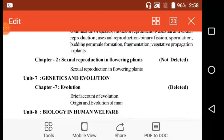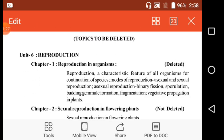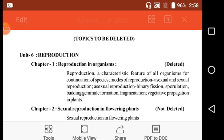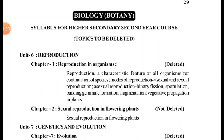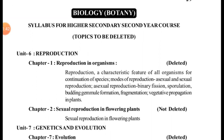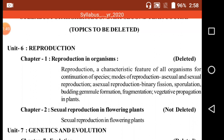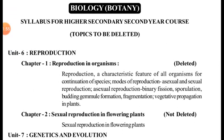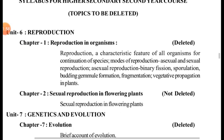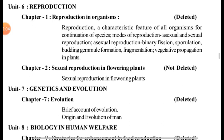This is the biology syllabus — specifically the botany syllabus. The topics that are deleted are written in bracket form, as you can see. This syllabus is available on the AHSC website. In Class 11 there were five units, and in Class 12 the units start from unit number six. So, reproduction: chapter one.